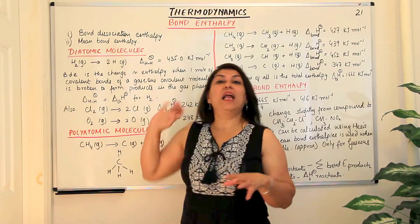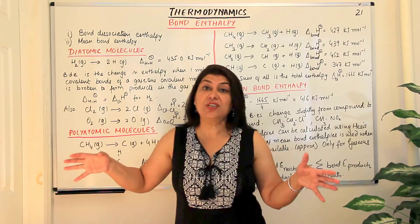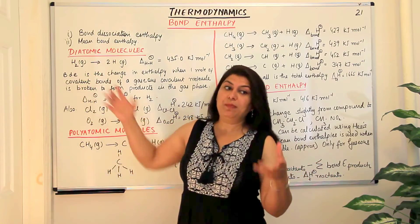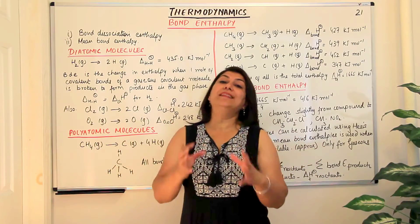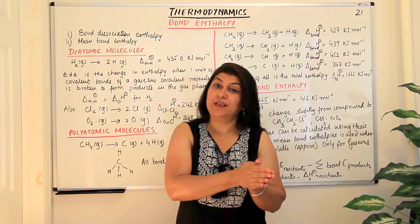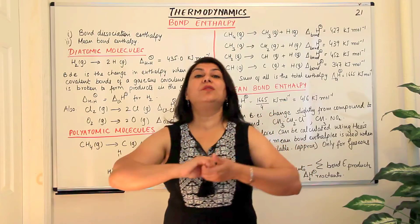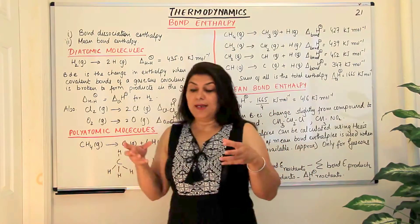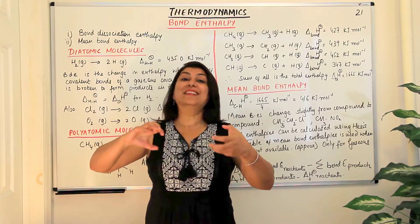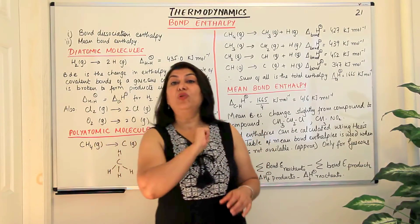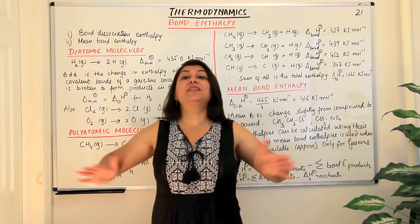So the bond enthalpy would be the bond dissociation enthalpy or bond dissociation energy, which would be positive. Why? Because you have to provide heat to break bonds. Or it could be the enthalpy of bond formation — the amount of energy given out when the bond is formed. Whenever a bond is broken, the enthalpy change involved in breaking one mole of bonds would be called the bond dissociation enthalpy.